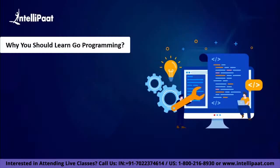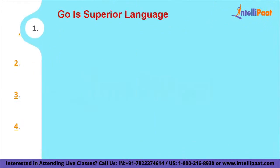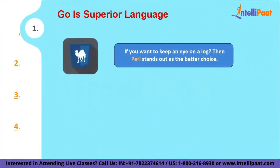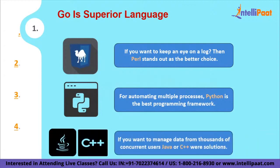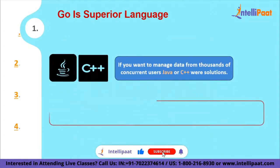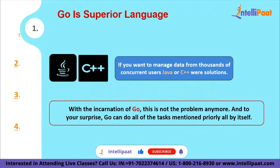Let me explain why you should consider learning Go. In recent years, you have probably seen tweets or blogs suggesting that Go is superior to Perl, Python, C, etc. The market continuously produces something with more value than previous versions. If you want to keep an eye on logs, Perl stands out. If you want to automate emails or send tweets, Python is the way to go. But if you want to manage data from thousands of concurrent users, rudimentary languages such as Java or C++ become the only solution. However, now with Go, that's no longer the case — Go can do all of those tasks all by itself. Go ensures that your toolset can be compiled across all platforms and hardware, is incredibly portable, and uses a surprisingly basic package management mechanism that just works.